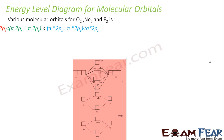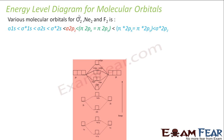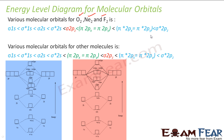Let us see the energy level diagram for various molecular orbitals. The exception here is for oxygen, neon, and fluorine — the energy diagram is different from other molecules. If we compare: for O2 and F2, the difference is that sigma 1s, sigma star 1s, sigma 2s, sigma star 2s are all the same, but in case of oxygen, neon, and fluorine, sigma 2p is lower than pi 2p — so sigma 2p comes first and then pi 2p comes. But in the case of other molecules, pi 2p comes first and then sigma 2p.